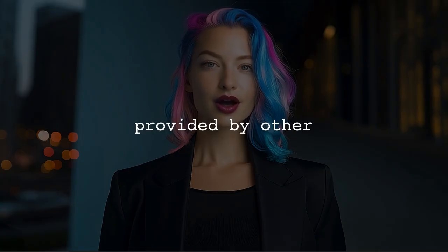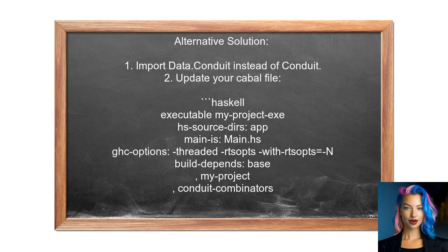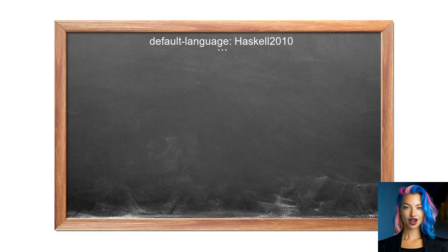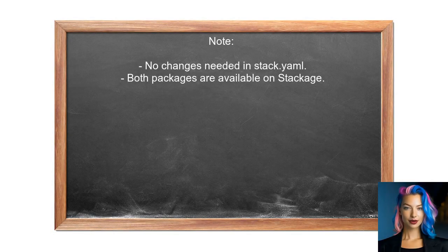Now, let's look at answers provided by other users. An alternative approach suggests that instead of importing conduit, you should import Data.Conduit. This is because the conduit module comes from the conduit-combinators package. To use it, update your cabal file to include conduit-combinators in the build-depends section. Additionally, you don't need to modify your stack.yaml file since both conduit and conduit-combinators are available on Stackage.